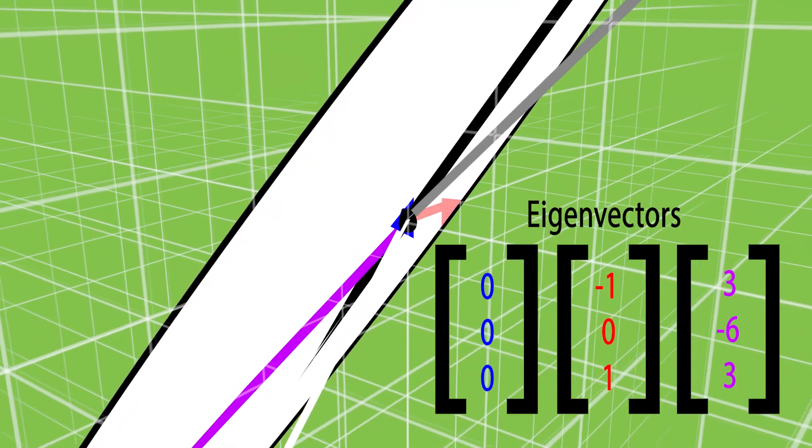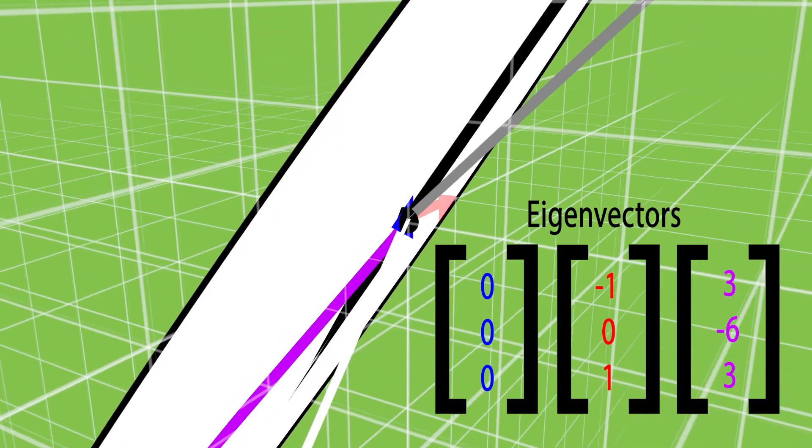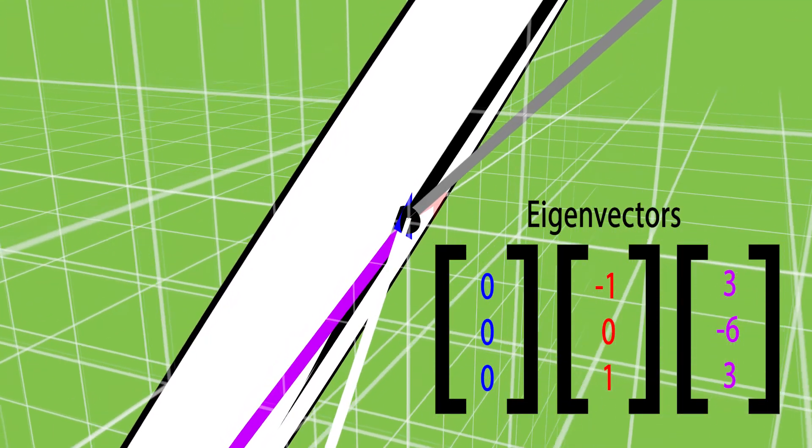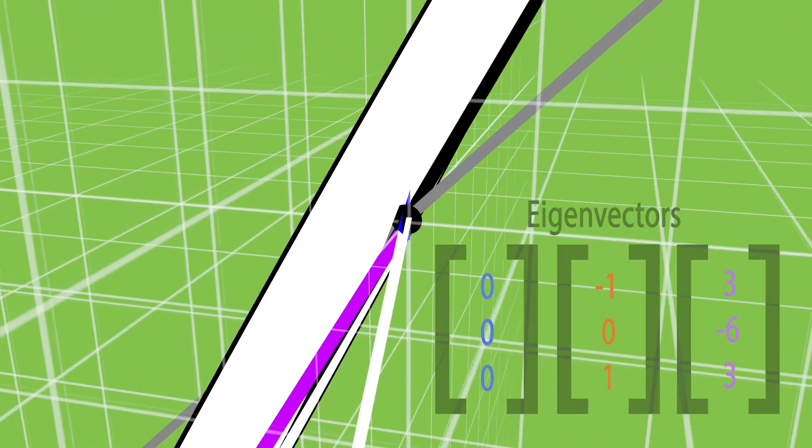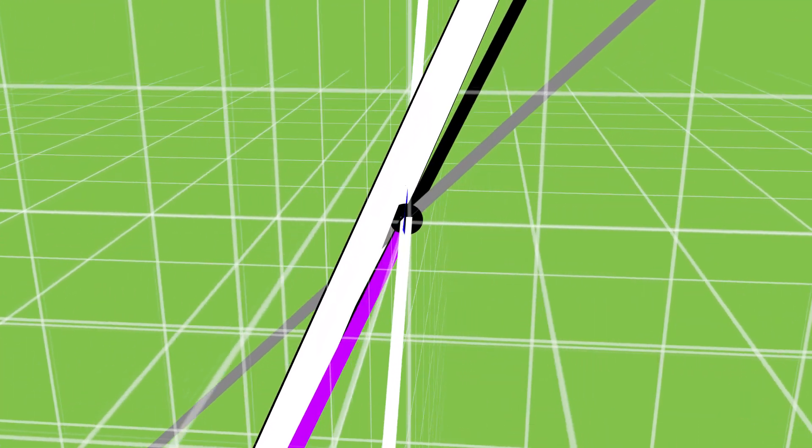Spectral graph theory asks questions about this ellipse to determine graph behavior: what the fastest way from dot to dot is, how many pathways there are from dot to dot, etc.